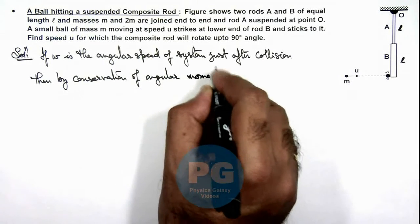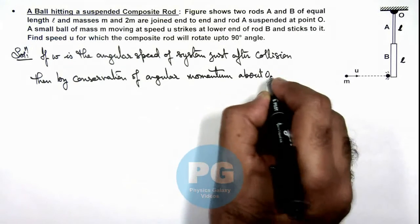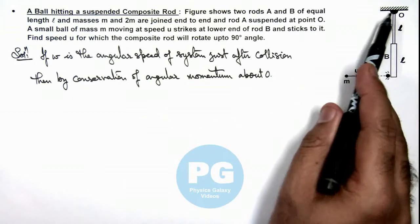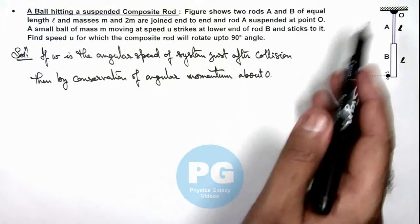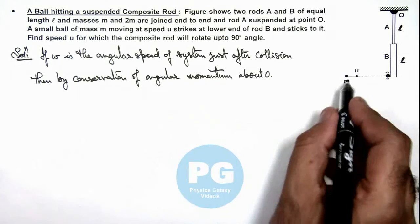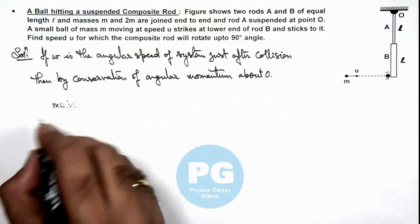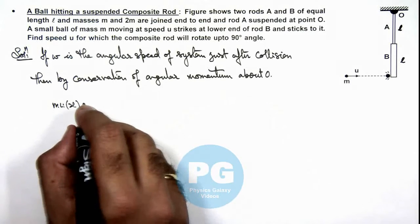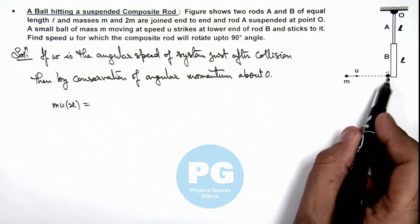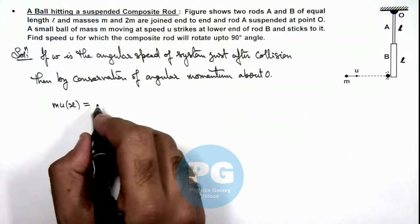we can write the angular momentum about point O, because at point O there is a hinge and there won't be any torque about point O as the hinge force is passing through point O only. The initial angular momentum of the ball was m u multiplied by 2l, and after collision, as this mass m sticks to the end point of rod B, the final angular momentum can be given as I omega.